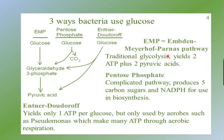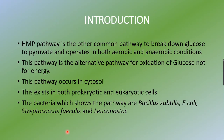So these are the three pathways: EMP pathway, HMP — which we also call the pentose phosphate pathway — and the Entner-Doudoroff pathway. Now let's begin with the HMP pathway. The HMP pathway is also called the hexose monophosphate pathway, or pentose phosphate pathway (PPP), or phosphogluconate pathway. These are the alternative names: hexose monophosphate pathway, pentose phosphate pathway (PPP), and phosphogluconate pathway.